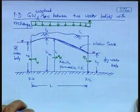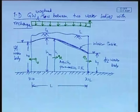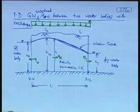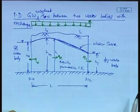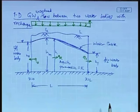Welcome to lecture number 11, in which we will continue with the 1D groundwater flow in an unconfined aquifer. Firstly, let us consider the case of 1D unconfined groundwater flow between two water bodies having a discharge in the vertically downward direction.